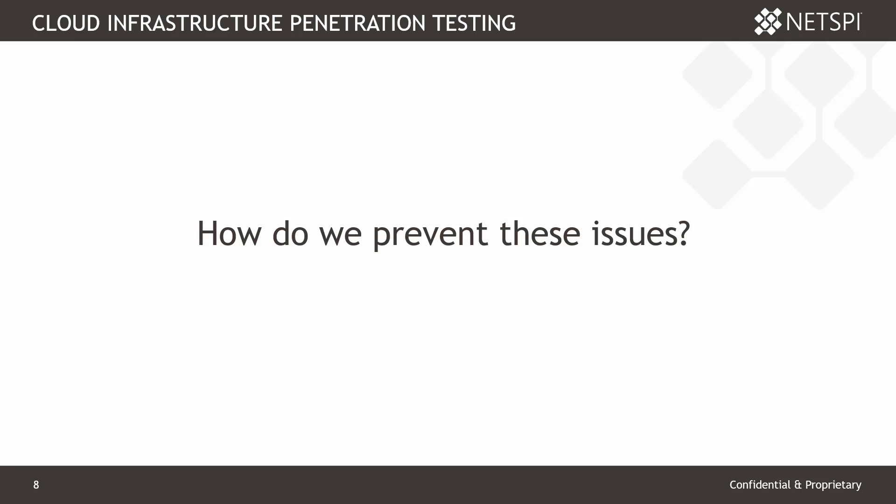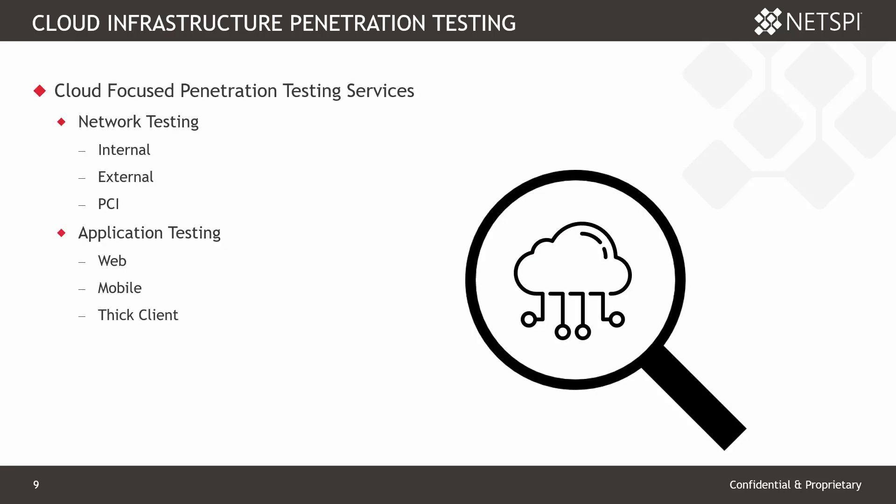Those are just the basic common issues we run into. To talk about how we can prevent them: there are a few different approaches to assessing the security of your cloud environment. You can integrate cloud service testing into your traditional network and application pen testing programs. From the internal network side, we recommend including any cloud systems or environments exposed to the internal network. From the external side, any cloud services or virtual machines exposed to the internet should be included in your external penetration testing scope.